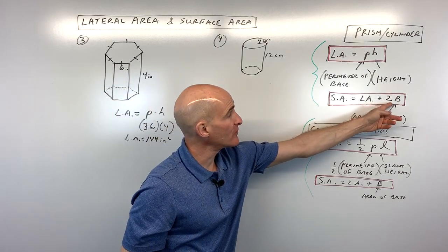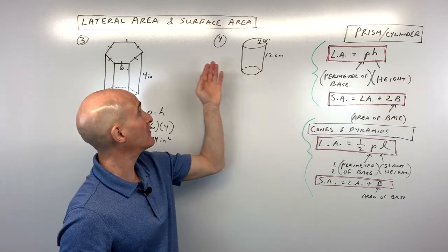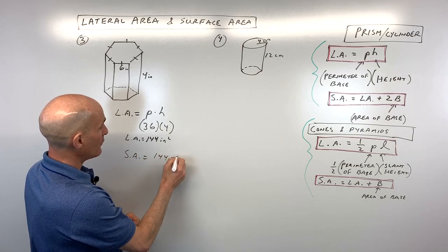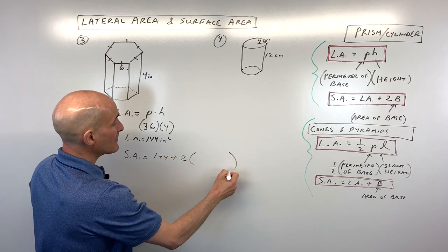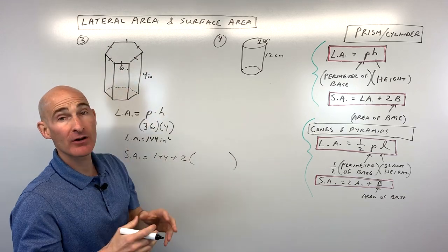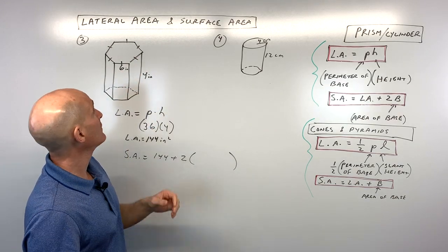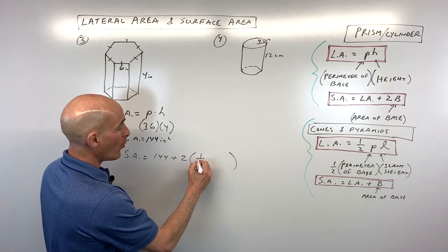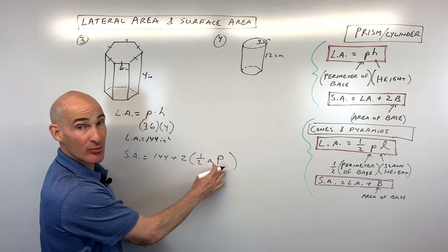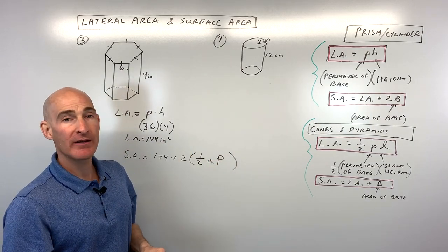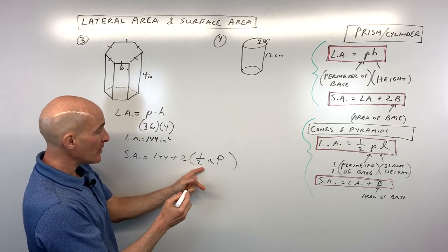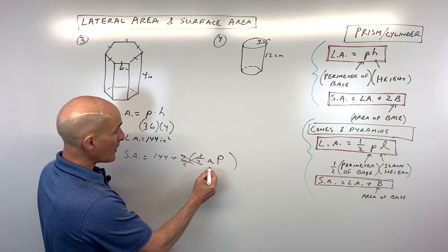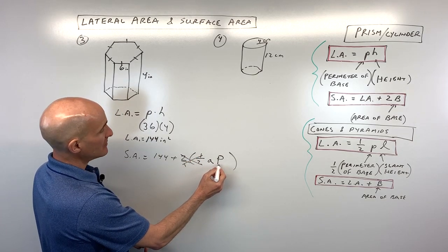For the surface area, we add two times the area of the hexagonal base. The area of a regular polygon is one-half times the apothem times the perimeter. Since we're multiplying by two, the two and one-half cancel, leaving us with apothem times perimeter. The perimeter is 36, so we just need to find the apothem.